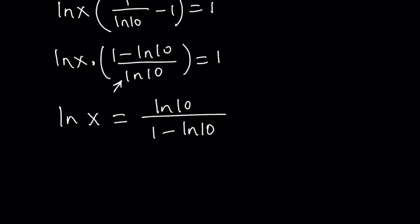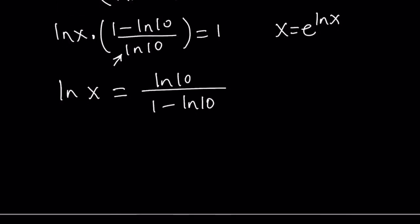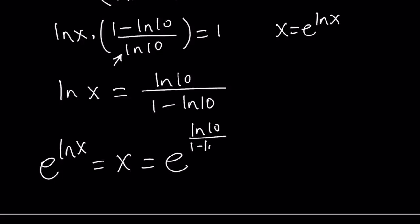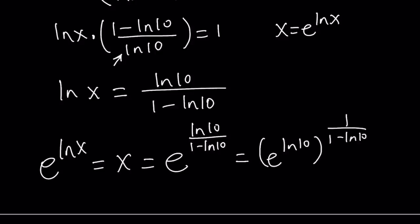So we didn't get x yet. We're going to do the following: x can be written as e to the power ln x, and of course x needs to be positive in this case. So we can go ahead and do e to the power of both sides. So e to the ln x equals x, and that is equal to e to the power ln 10 over 1 minus ln 10. This can also be written as e to the power ln 10, to the power 1 over 1 minus ln 10. Notice that e to the power ln 10 is equal to 10, so this becomes 10 to the power 1 over 1 minus ln 10. That's the x value.